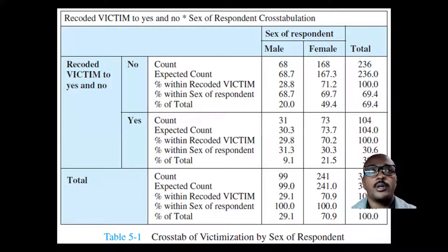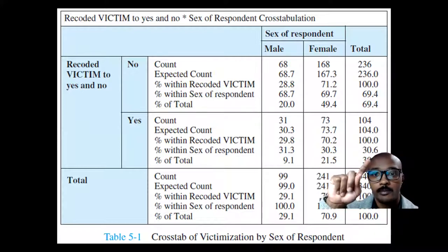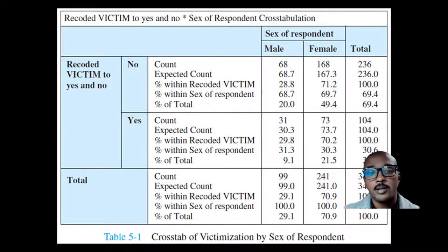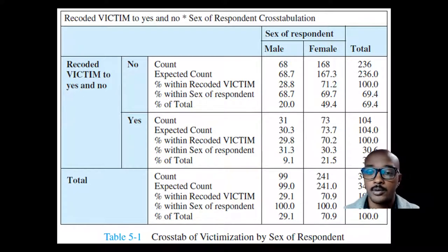Right now we're still dealing with bivariate tables, also called contingency tables or cross-tabulations. The cross-tabulations we've been looking at present two different variables. This is a chart directly from chapter five — a cross-tab between sex of the respondent in two categories, male or female, and a question about whether or not they've been a victim of a crime, yes or no, again in two categories. A bivariate contingency table like this with percentages or frequencies allows us to make sense of an association between two variables.